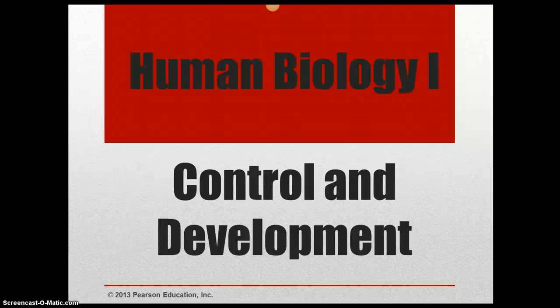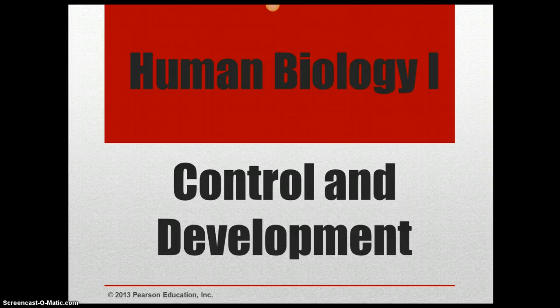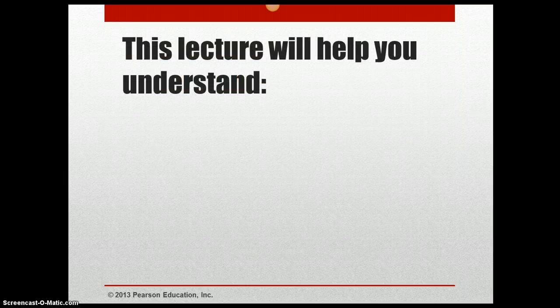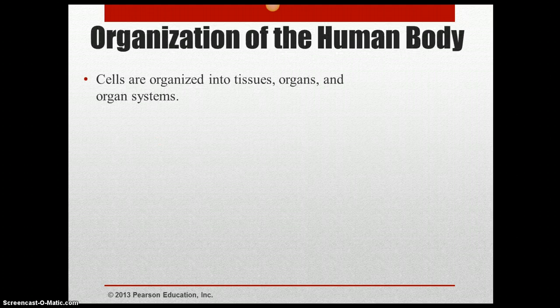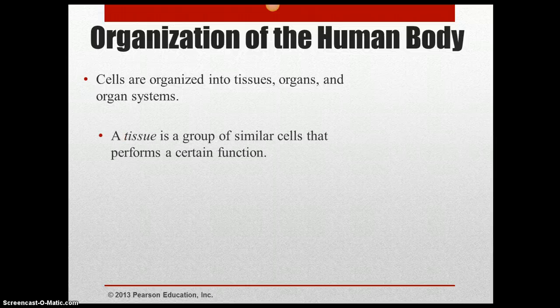Hi, this is Amanda. Today we will be starting Chapter 19, which is human biology — more specifically, the control and development of the human body. The lecture today will help you understand the organization of the human body and how we maintain homeostasis. We have cells that are organized into tissues, organs, and organ systems.